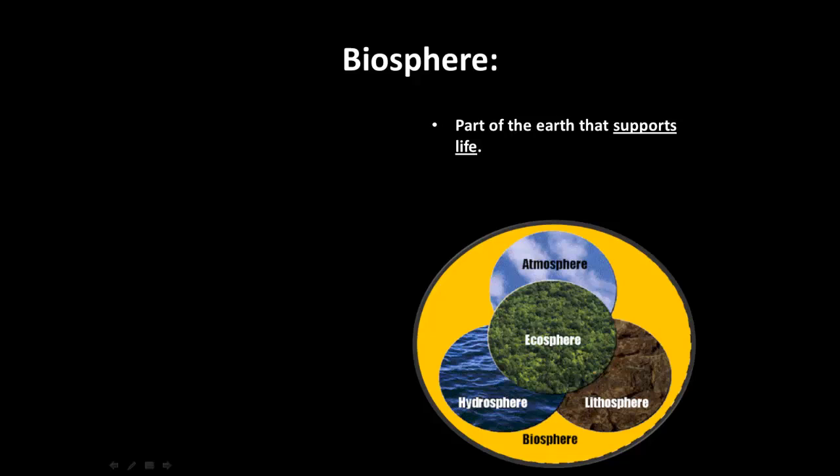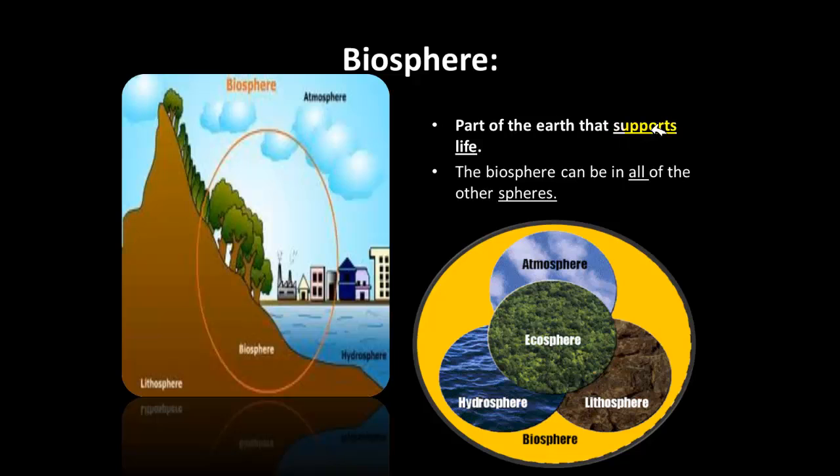And that just means that all of these, the atmosphere can support life. The lithosphere or land can support life. We know that because we live on land and the hydrosphere can support life. And the definition, once again, for the biosphere is the part of the earth that supports life. So the biosphere is a part of the earth that supports life. And based on, you know, and we've already discussed it with this illustration, the biosphere can be all of the other spheres. All of the other spheres can be included in the biosphere.